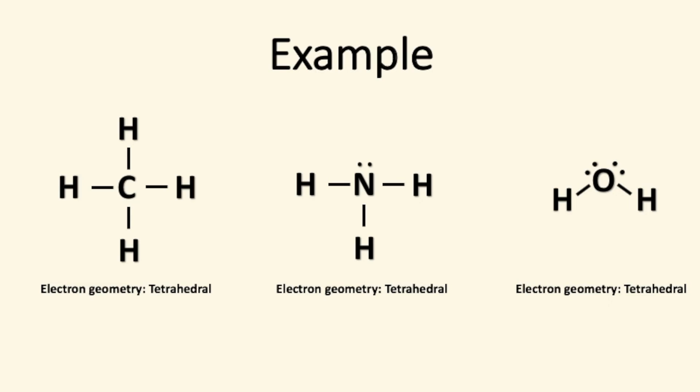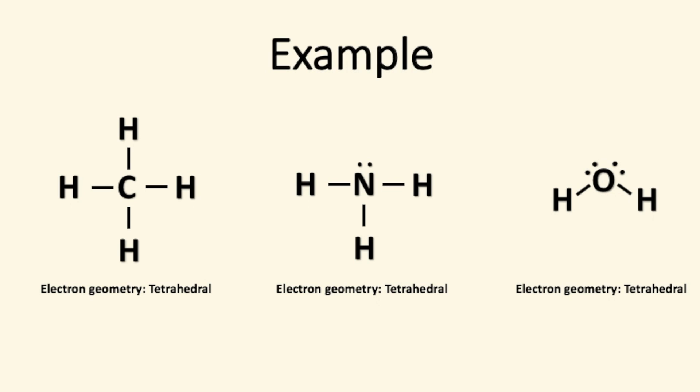Let's look at three examples: CH4, NH3 and H2O. When we draw the Lewis structures for these molecules we can see they are very similar and they all have four electron groups.